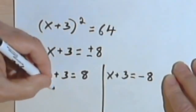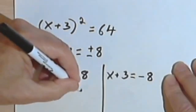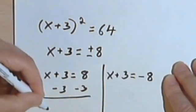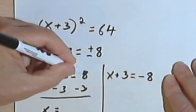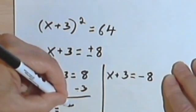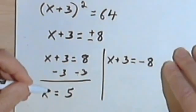So now I'm going to subtract 3 from both sides and I'll get x equals 8 minus 3 is 5. So one of my answers is x equals 5.